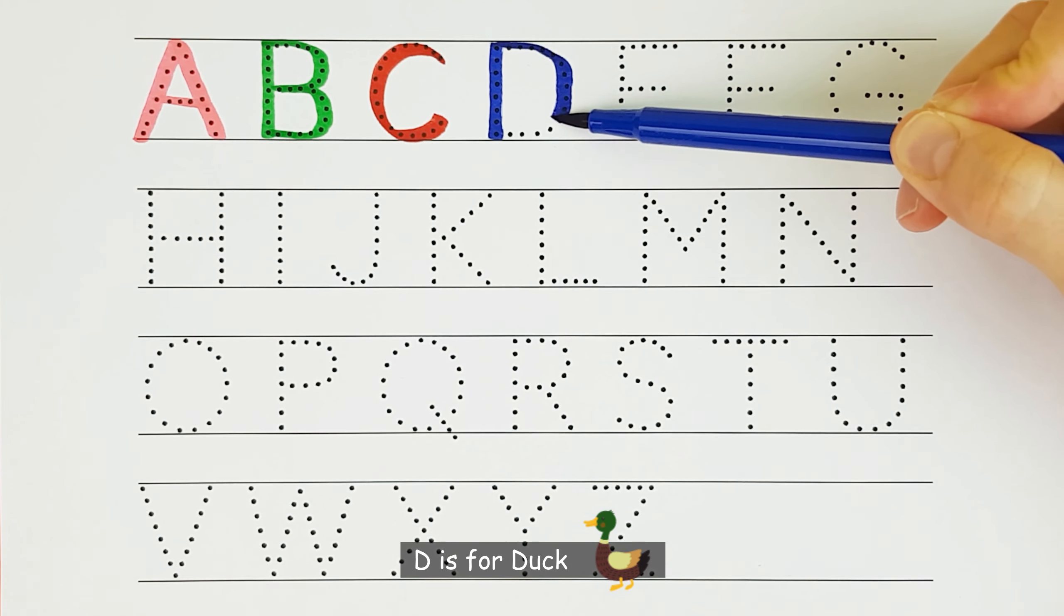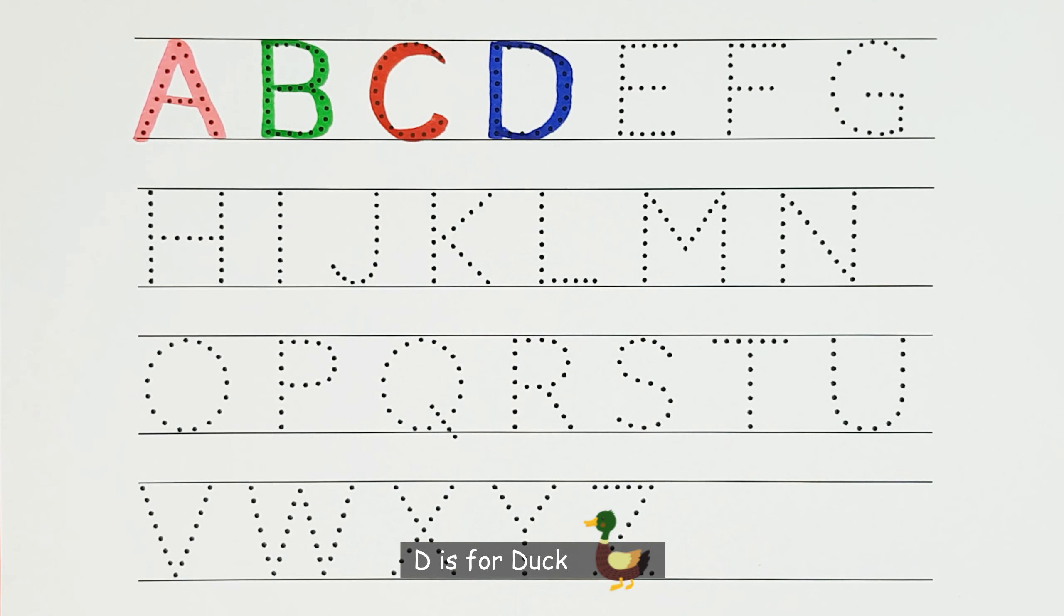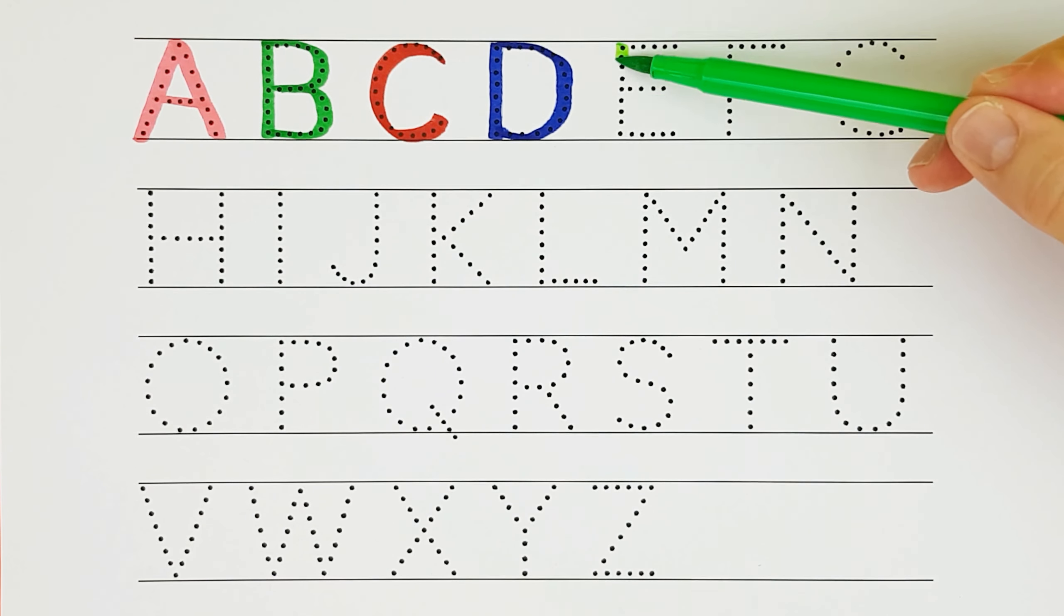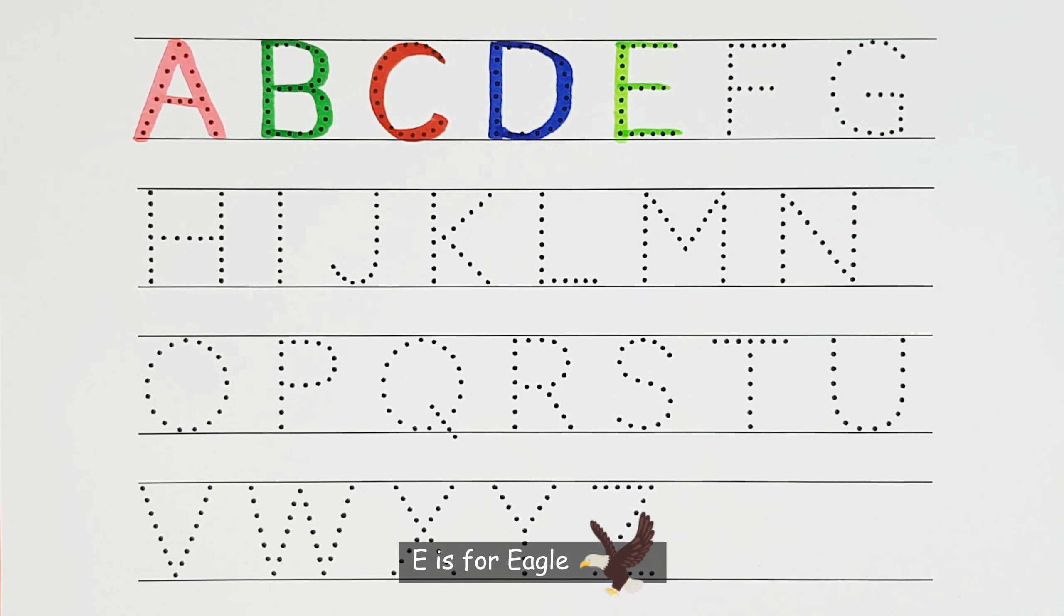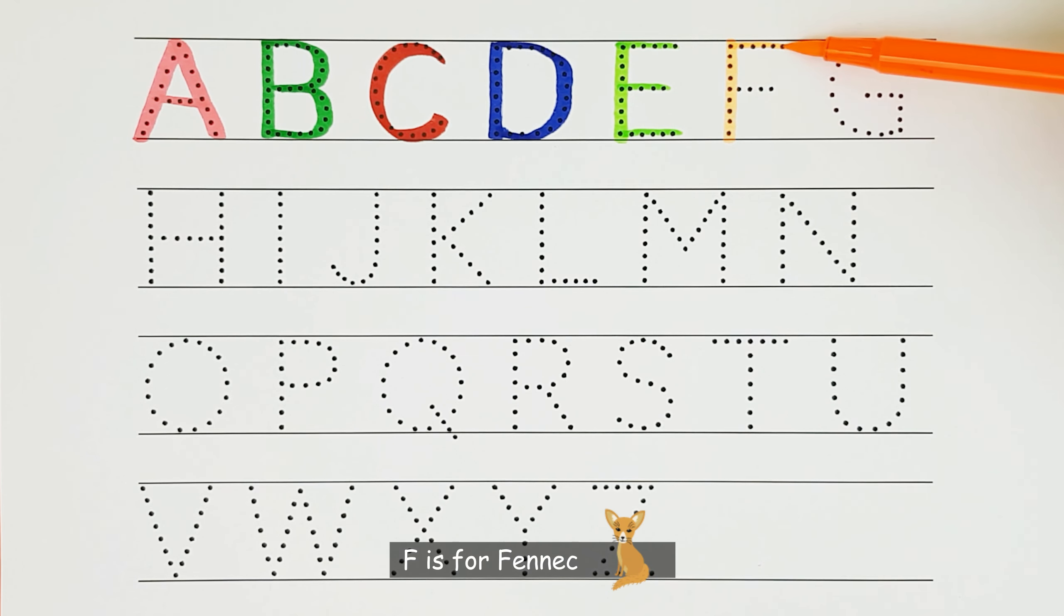D. D is for duck. D. E. E is for eagle. F. F is for fennec. F.